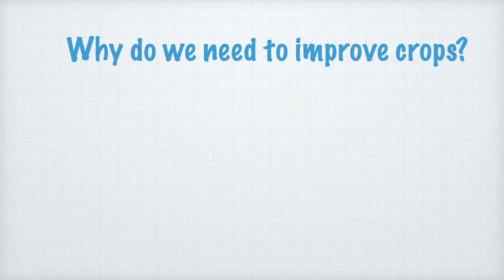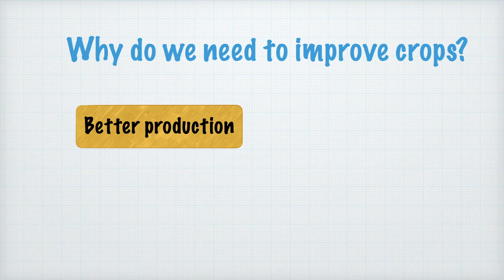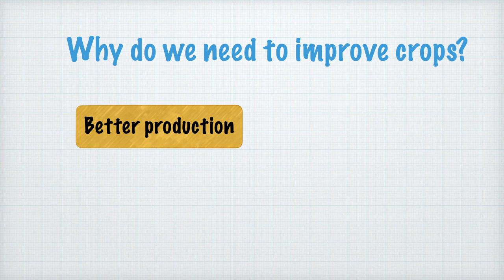Why do we need to improve crops? The first reason is to have better production. The growing population rate means the current output from our existing agricultural system is not enough to feed everyone, and in the future it may not produce enough to feed these people.